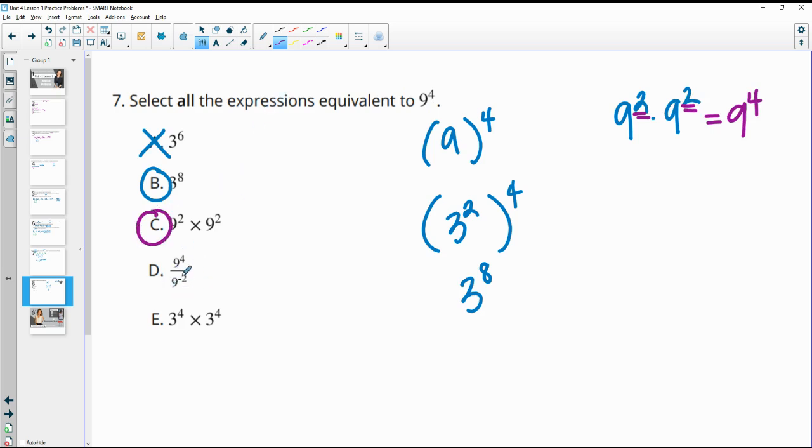When we're dividing, we subtract the exponents. So this is going to be 4 minus a negative 2. And 4 minus a negative 2 is really 4 plus 2. So this is going to have an exponent of a 6. So this one is 9 to the sixth, not 9 to the fourth. So D, not what we want.